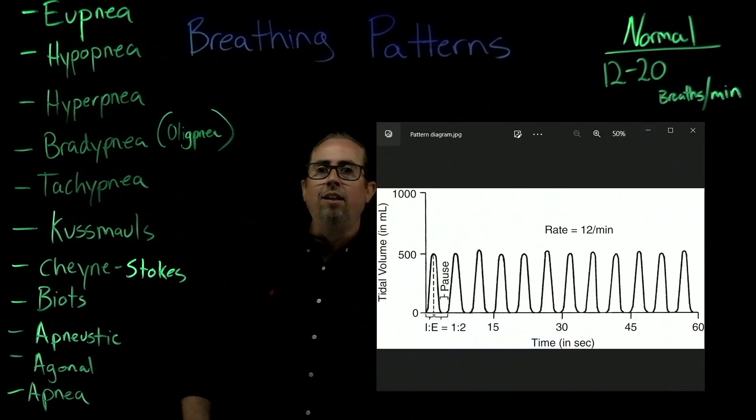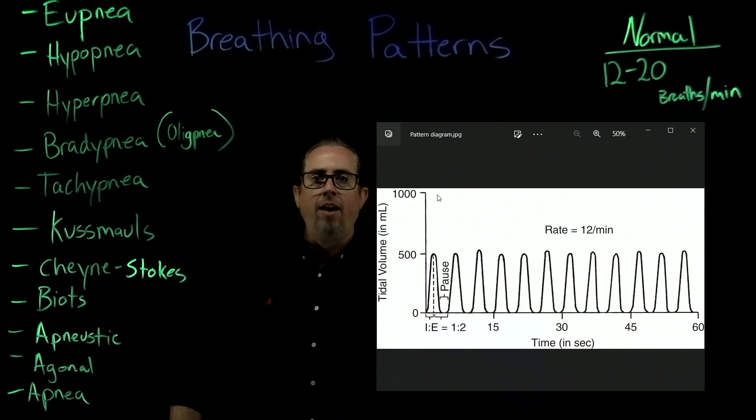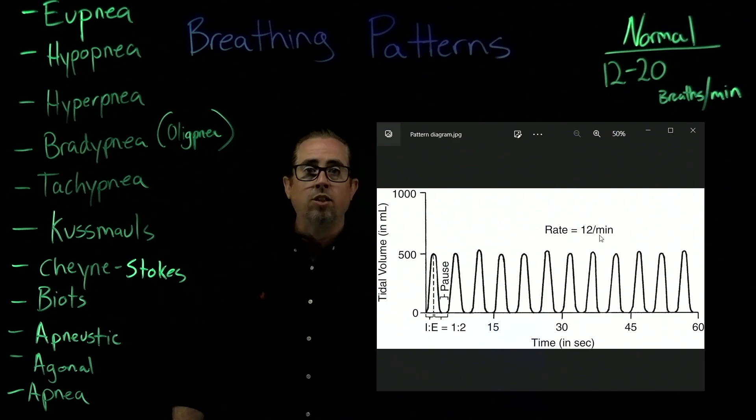Let's look at a breathing pattern and what it looks like. We have our vertical axis going up and down, which is a representation of tidal volume. We look at our horizontal axis here at the bottom, which is a representation of time in seconds: 15, 30, 45, 60. This is a one-minute line here. You can see there's a rate of 12 per minute. You count these peaks: one, two, three, four, five, six, seven, eight, nine, ten, eleven, twelve. Twelve breaths were given in one minute.